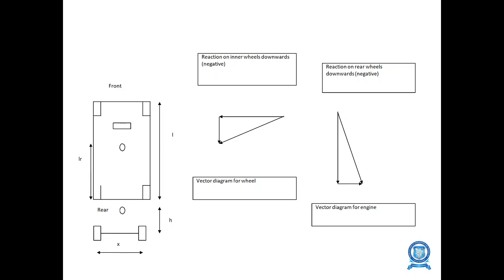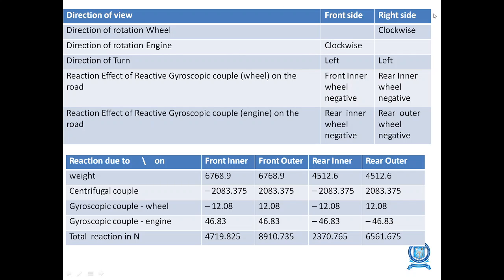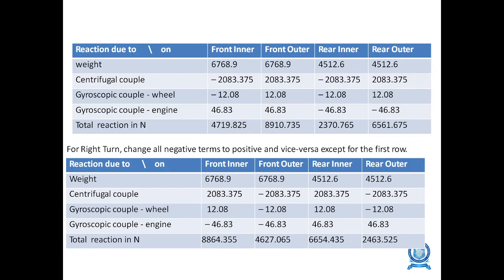The diagram represents the four-wheeler and the reactions of the wheels downward (negative), with the vector diagram for the engine drawn on the right side. The tabular column shows the direction of wheel rotation when clockwise; when it turns left, values become negative. After finding the values, substitute them in the tabular column — the direction will be opposite, denoting positive and negative signs. All other values remain the same; only the total reaction changes.